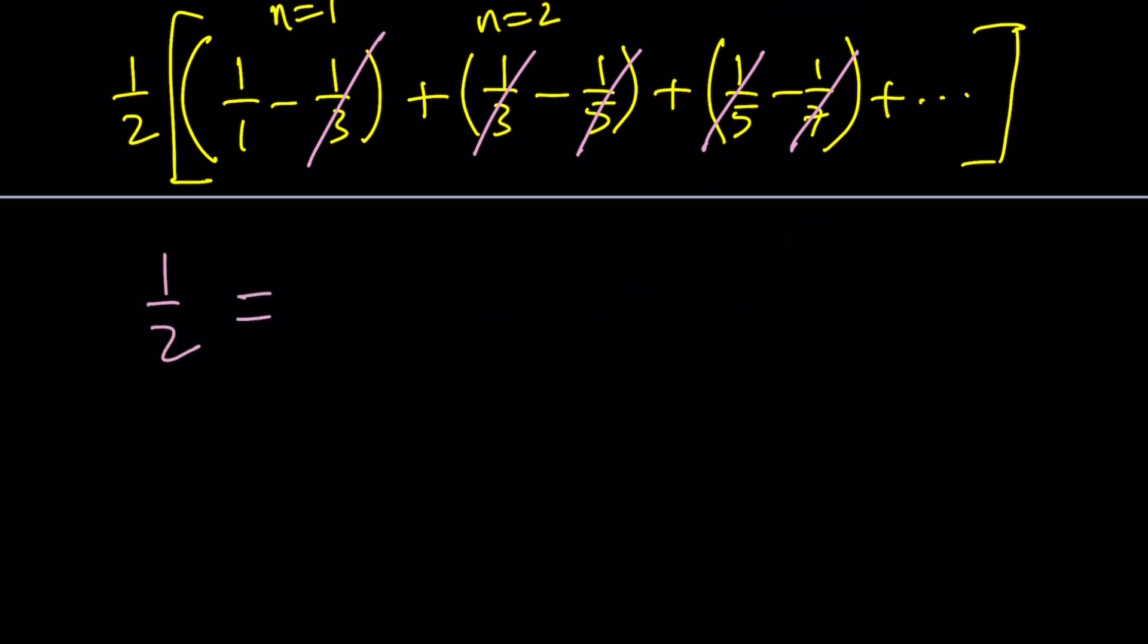What did we start with? 1 over 3 plus 1 over 15 plus 1 over 35 and so on and so forth. If you're not convinced, go ahead and plug it into Wolfram Alpha. I didn't. I don't know why. Actually, I did. And I got this result, I think. I didn't even know that Wolfram Alpha could handle dot dot dot, but it can. So, thank you, Wolfram Alpha. You're pretty smart. Anyway, so the answer is 1 half.